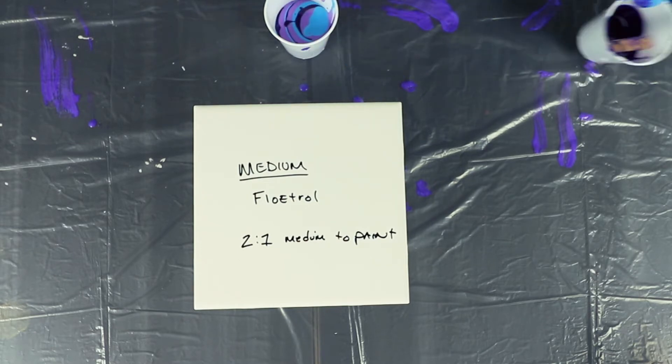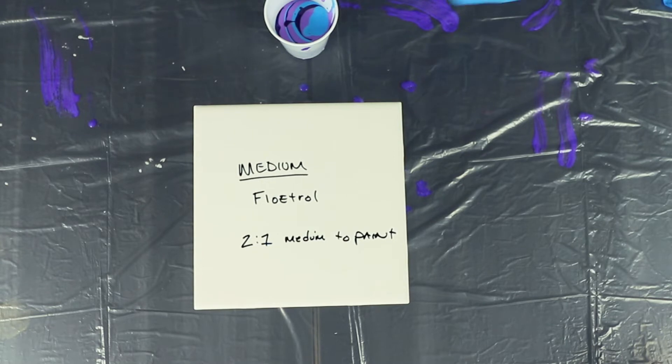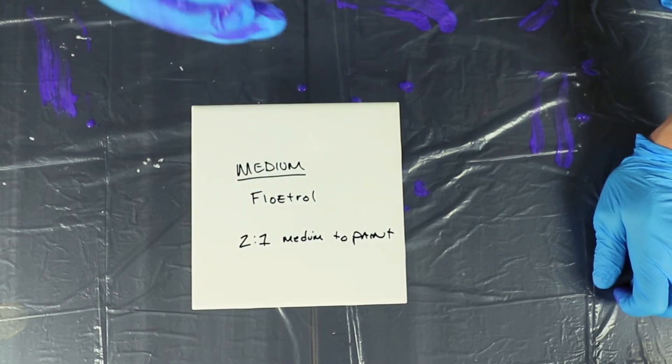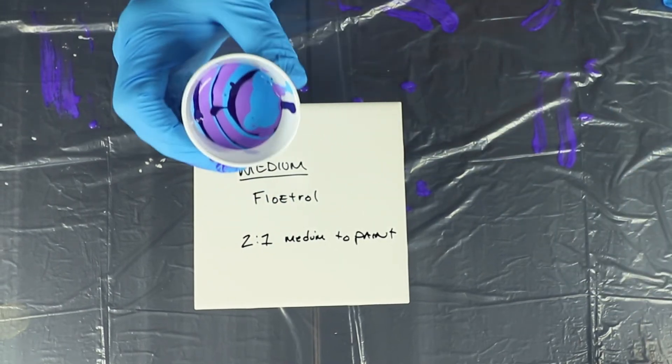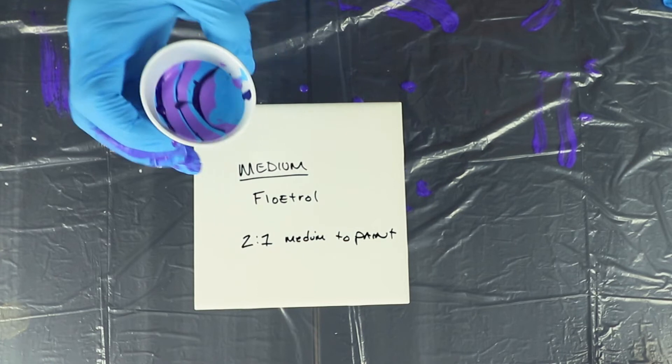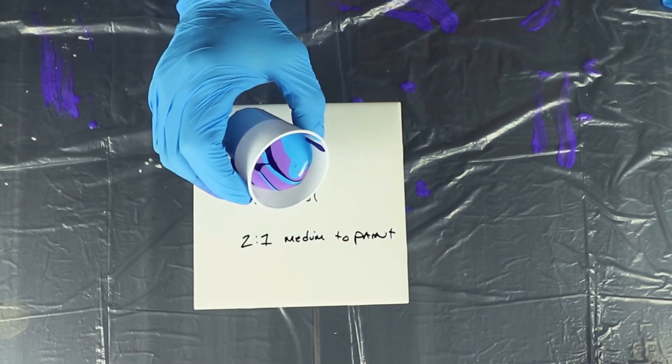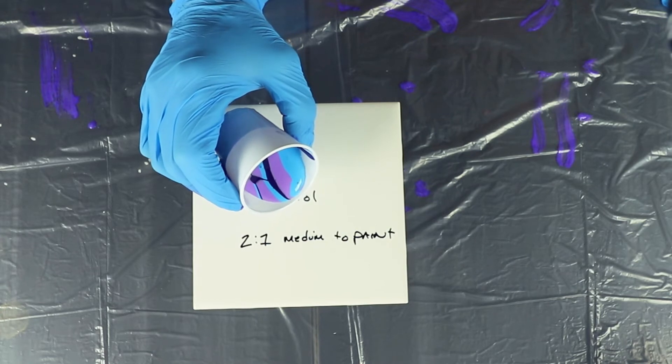All right, so we layered our cups. And we're going to do the same type of pour, but this one is just Floetrol and paint. No water. And we're going to do the same technique we just did. And when I poured it last time, I poured with those lines. So, I'm going to do the same thing. Because I do want to achieve something similar.